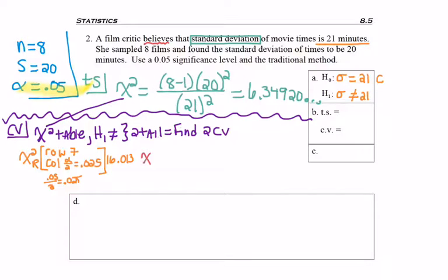Now I need to find chi-squared left. I'm still in row 7, and if I don't use the rainbow effect to get to the other column, then I'm going to do 1 minus alpha, the complement of the value I just found. So 1 minus .025 is .975. So in that column row 7, I find 1.690.